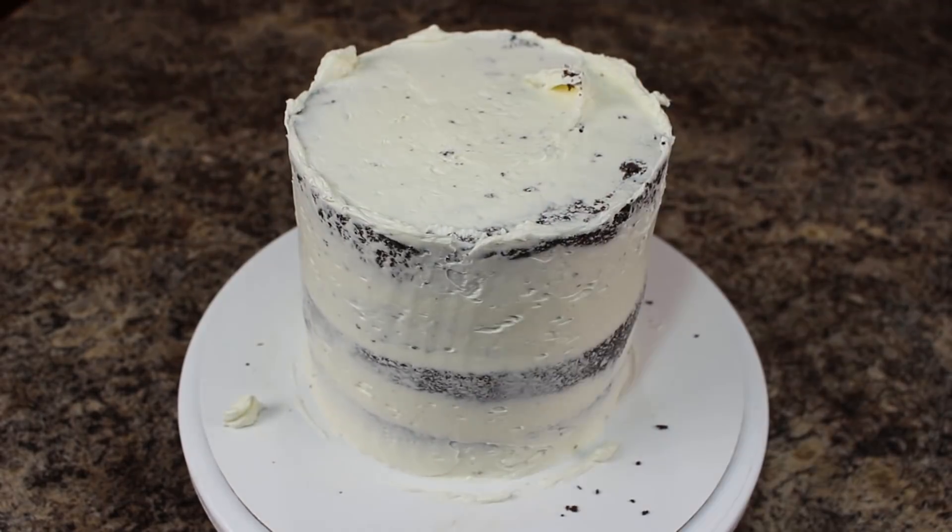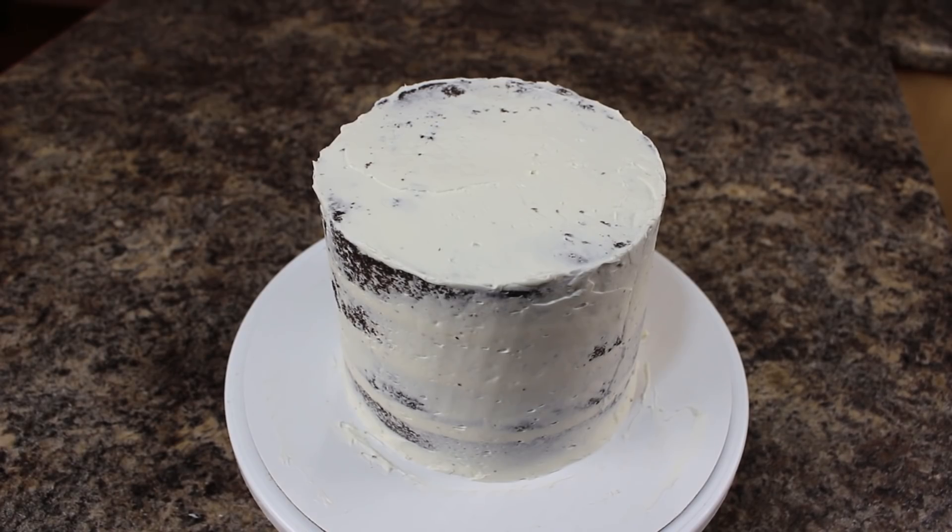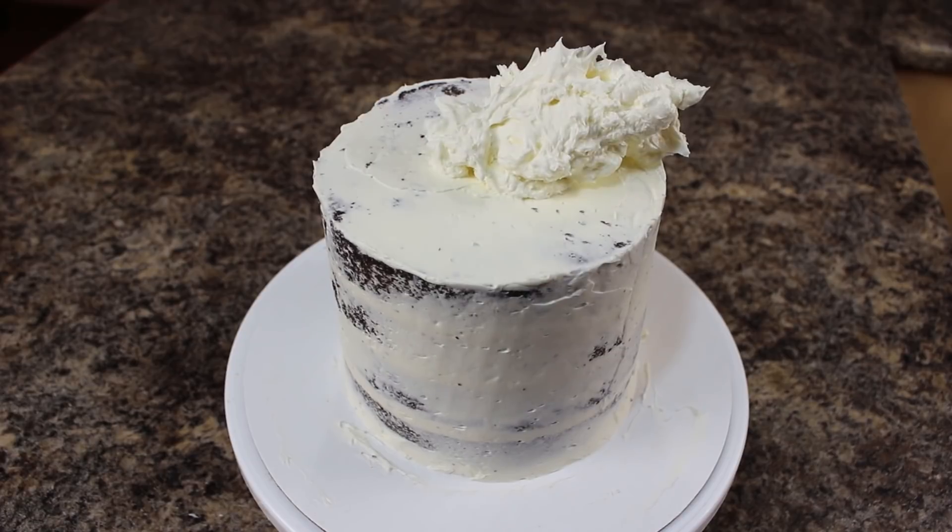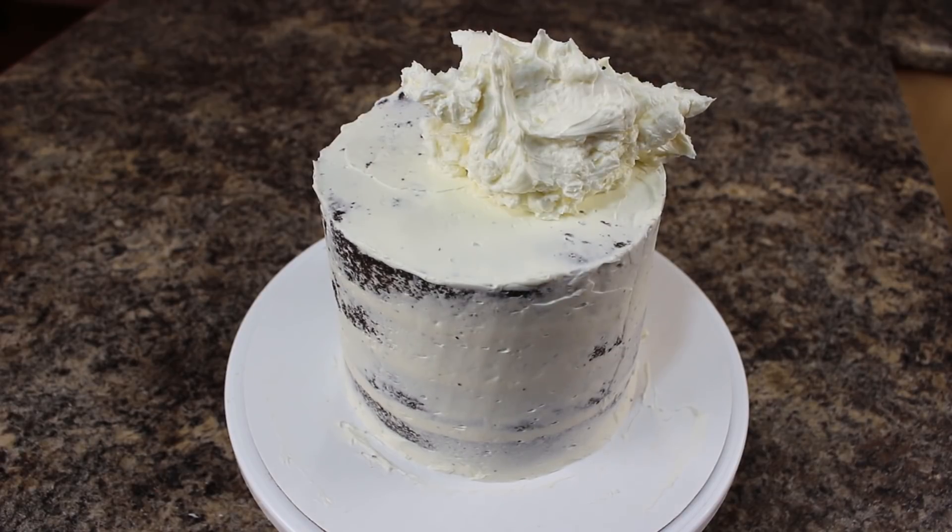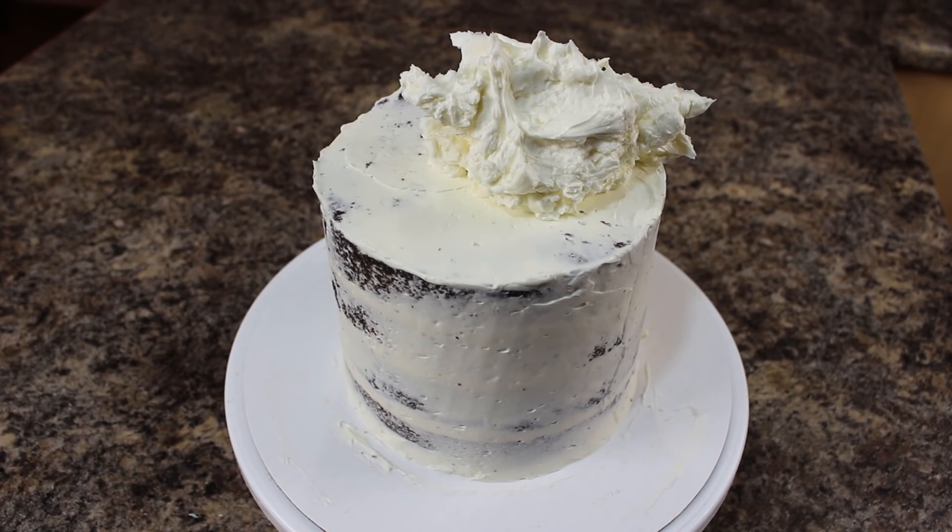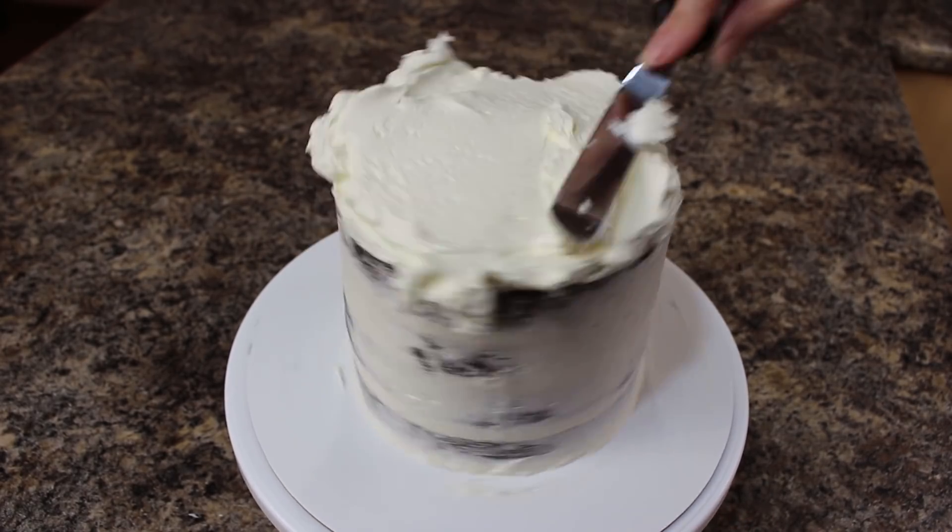Once you can touch your finger to the cake and none of the buttercream comes off, then it's time for the final ice. I'm applying a big dollop of buttercream on the top of my cake and then using my small offset spatula and my turntable, I'm just going round and round and smoothing that out until my top is nice and level.